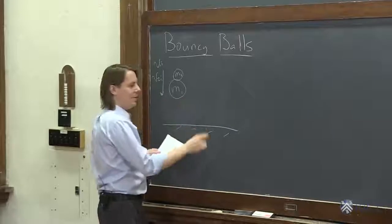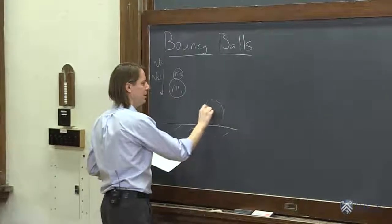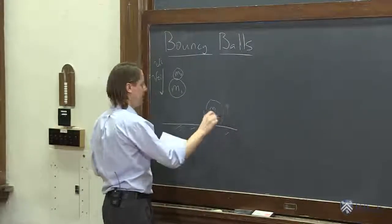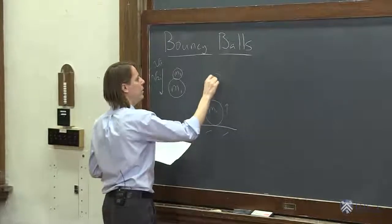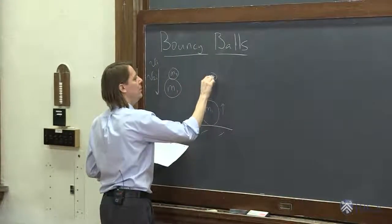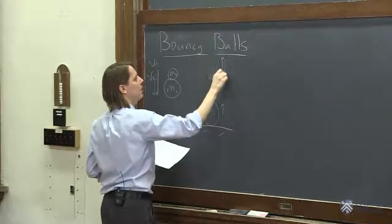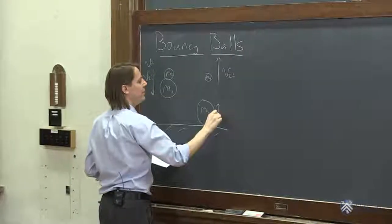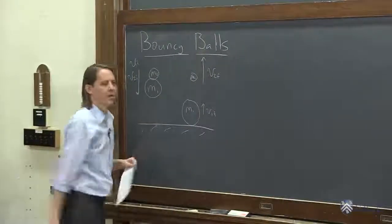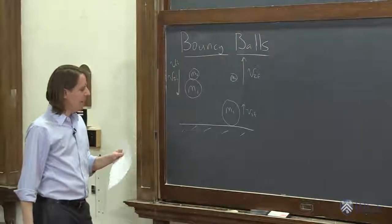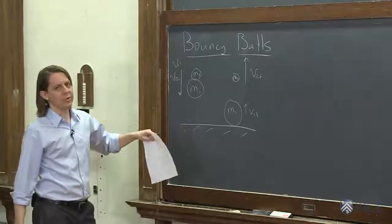But what happens? M1 kind of sits here and moves up a little bit, but M2 moves up much faster. So V2f and V1f looks kind of like that. So we can actually treat this as a collision.